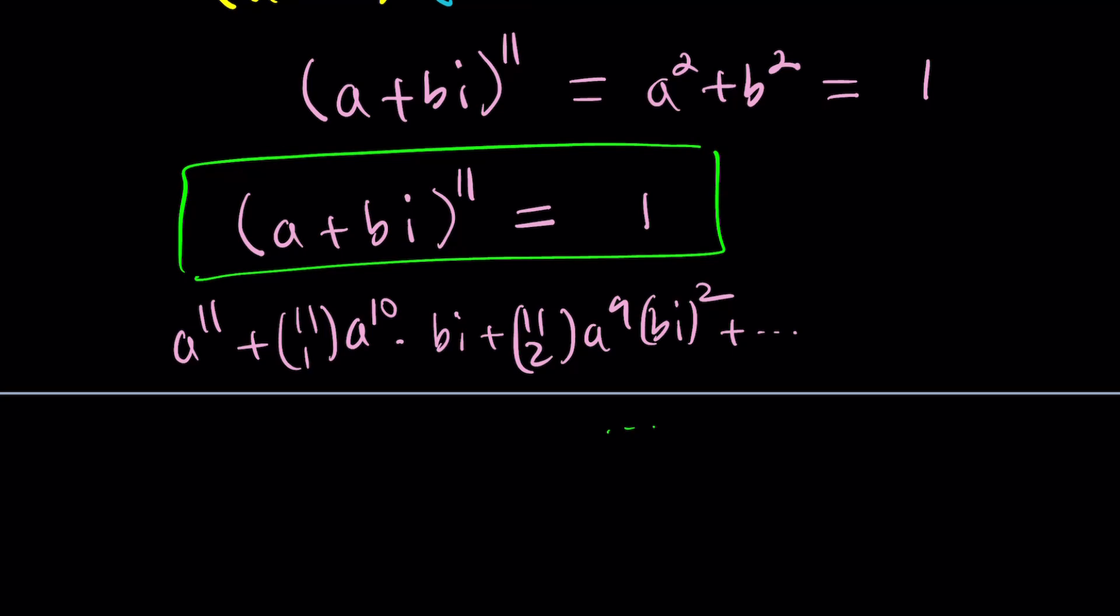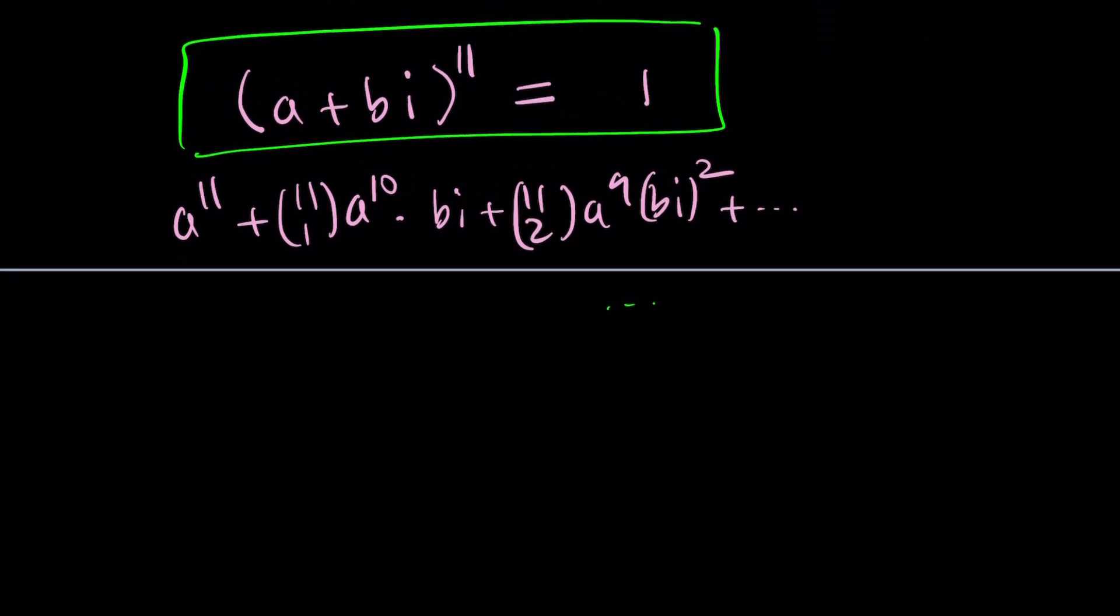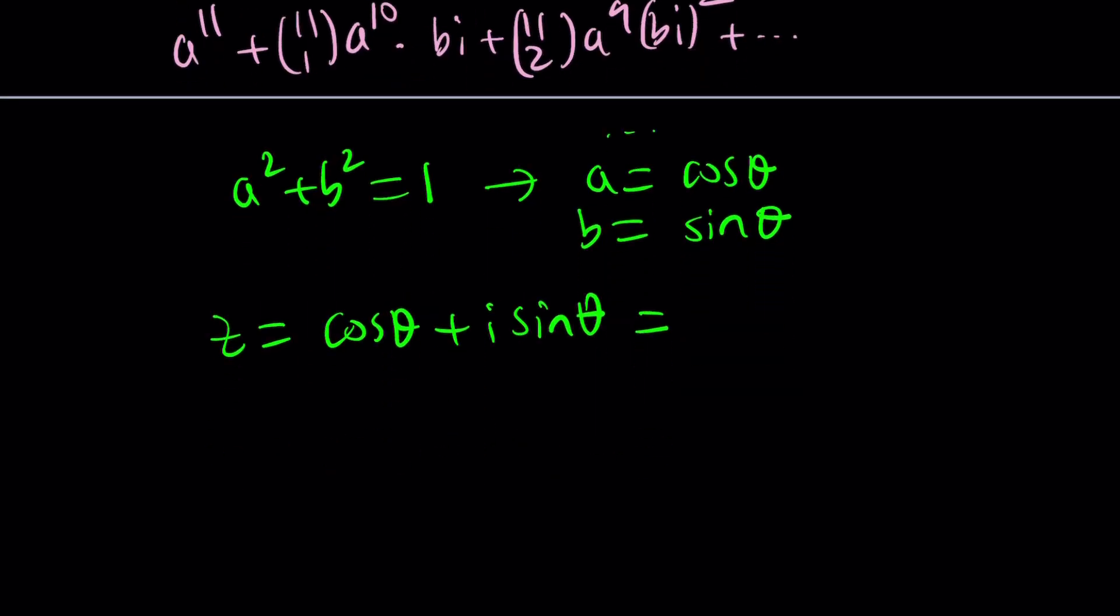Guess what? We're going to go into roots of unity. Now, since a squared plus b squared is equal to 1, we already got that, I can go ahead and set a equal to cosine theta and b equal to sine theta. So z can be written as cosine theta plus i sine theta. And of course, thanks to Euler, this can be written as e to the power i theta in the most compact form.